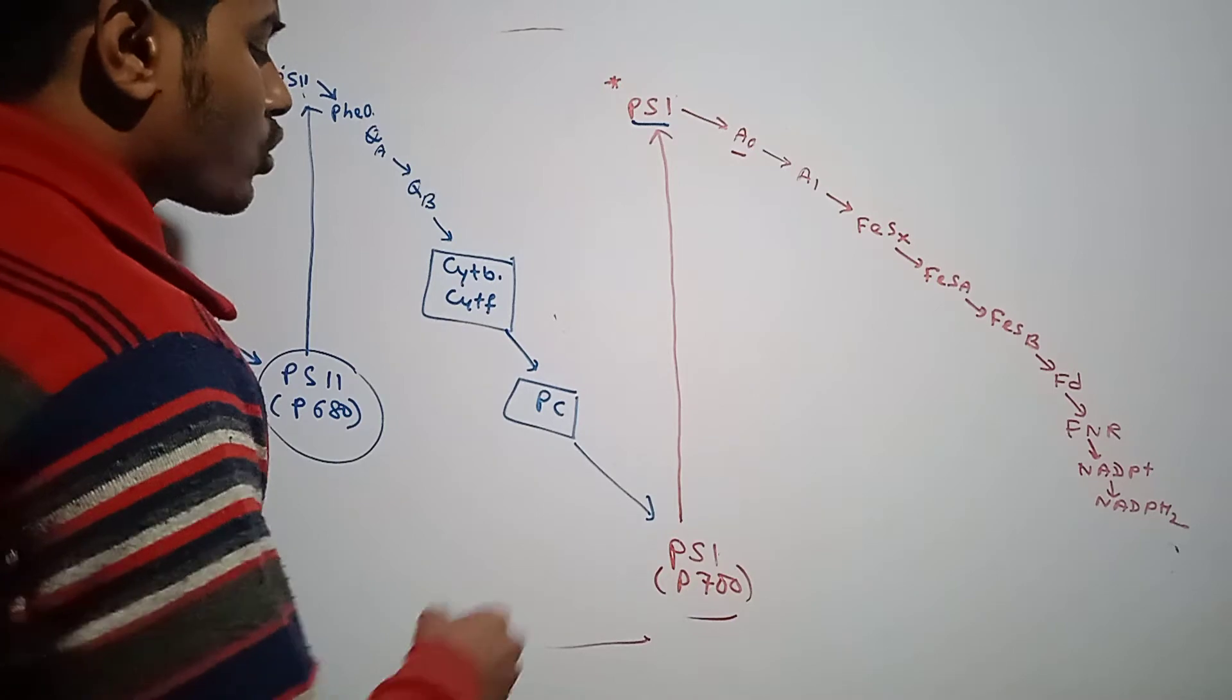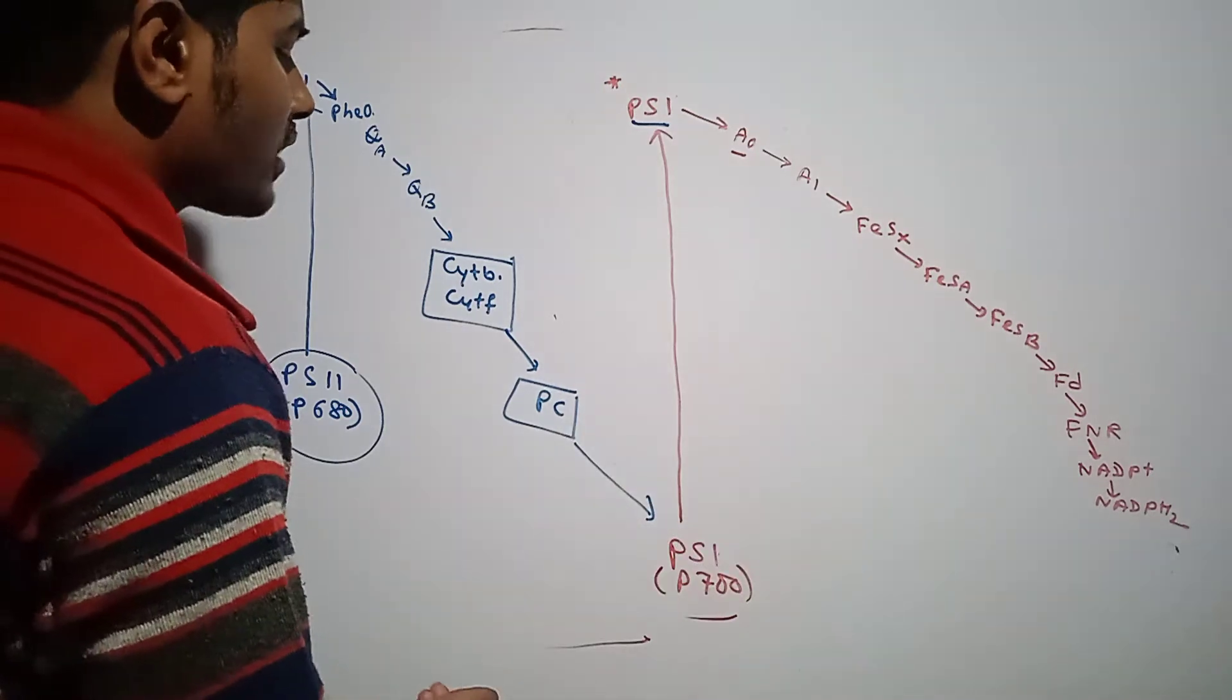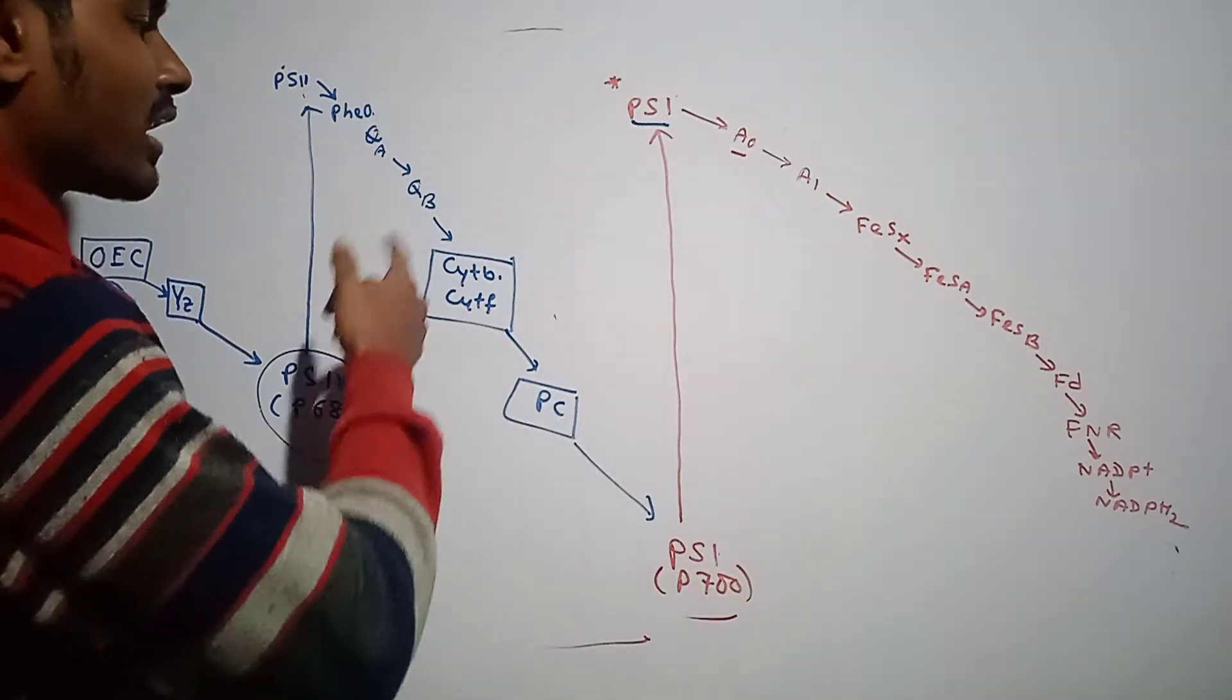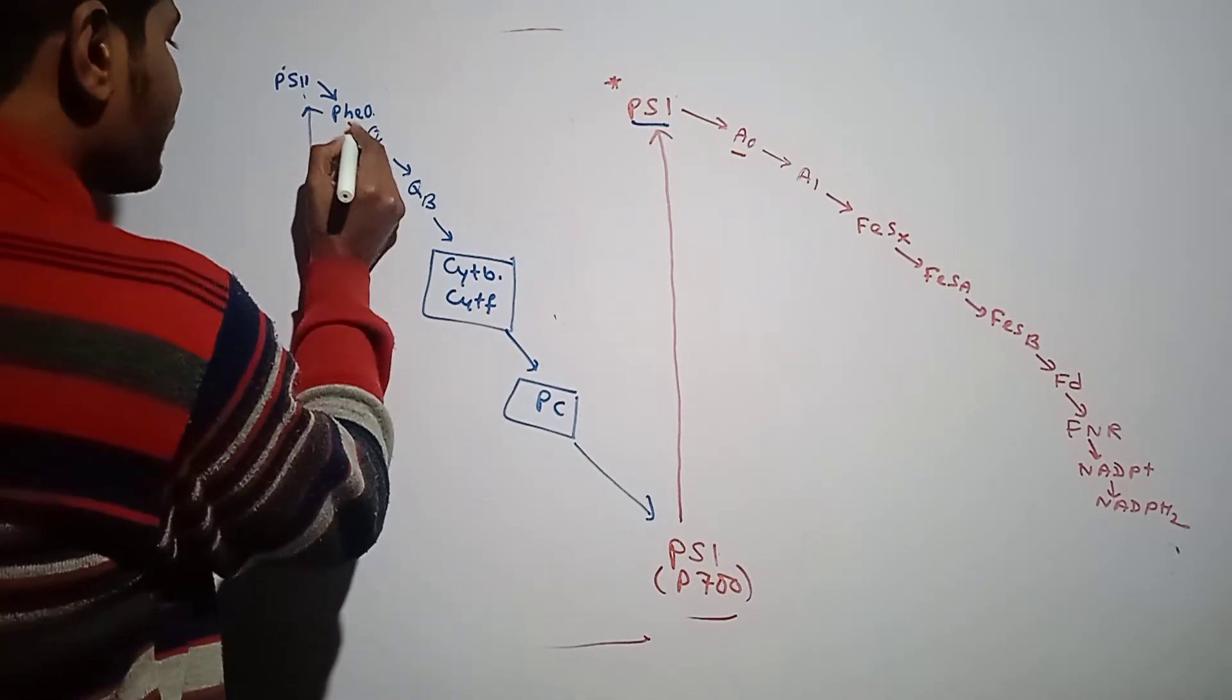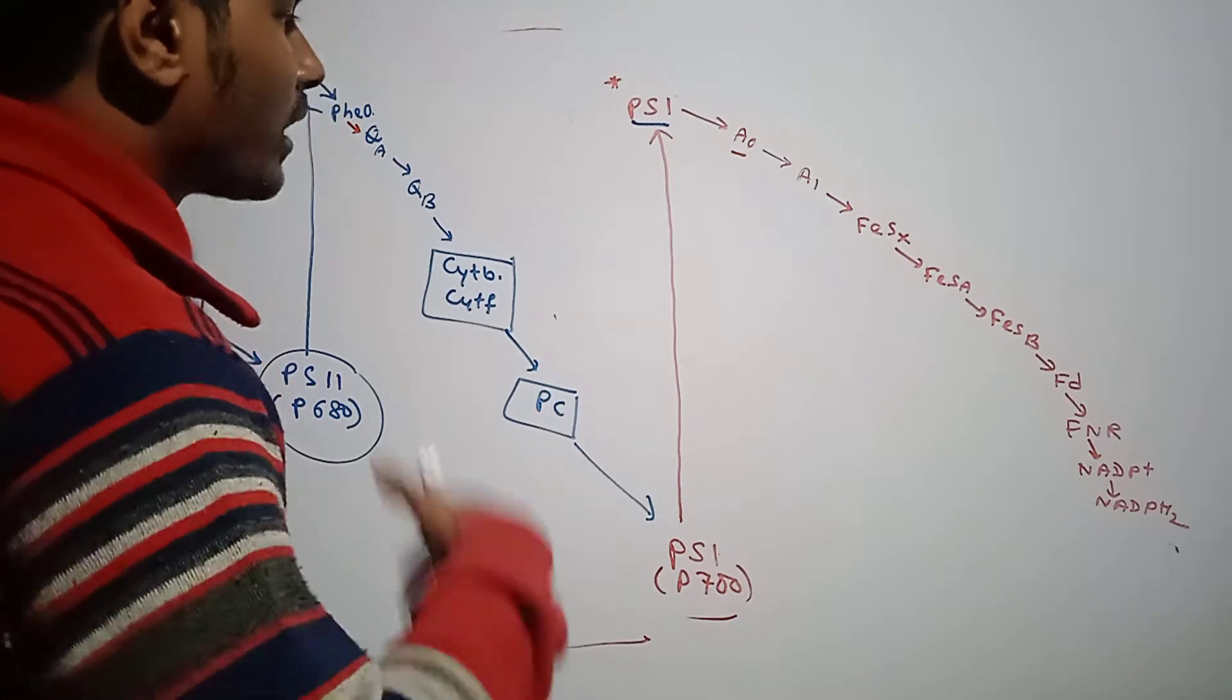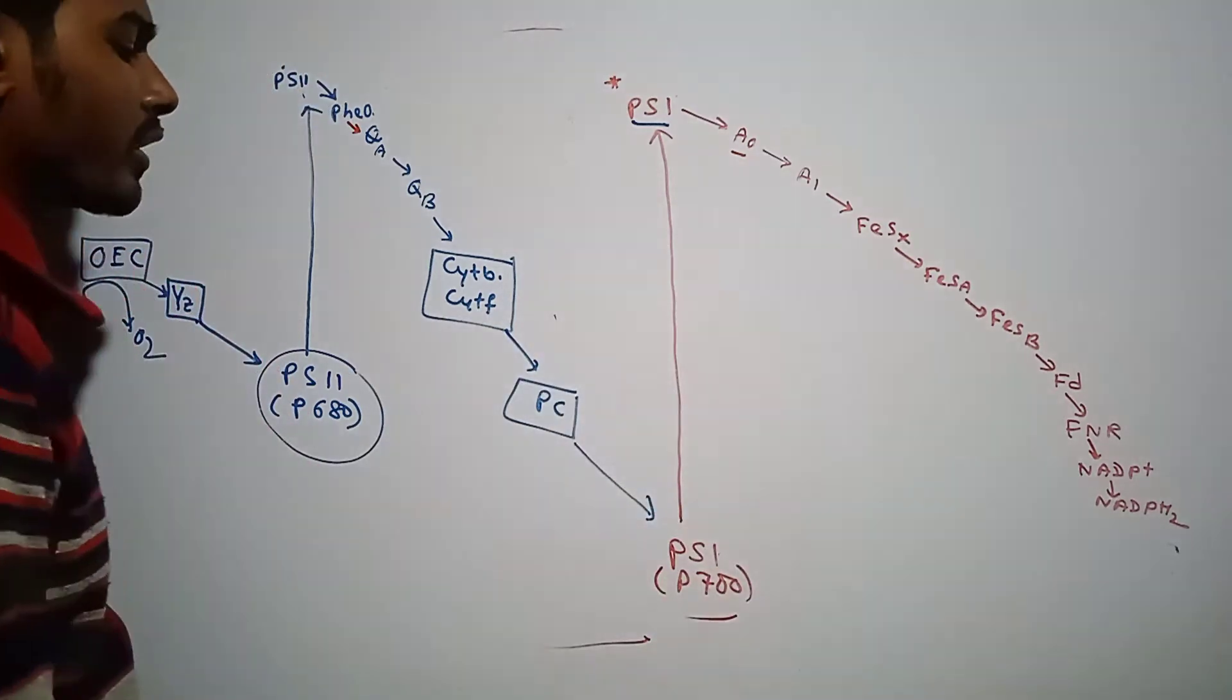To compensate for this electron loss, Photosystem 2 releases its electron. The electron goes through several electron carriers, ultimately reaching Photosystem 1, compensating for the loss of the electron by Photosystem 1.